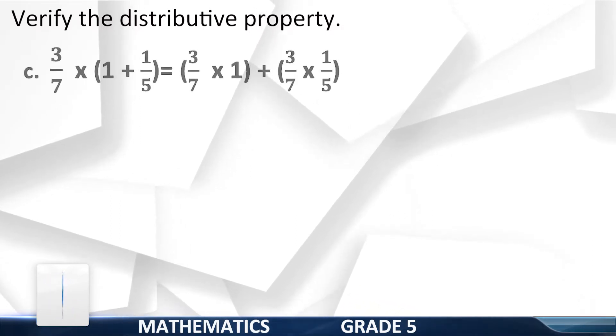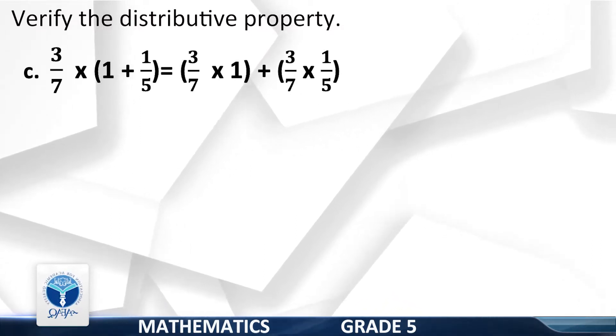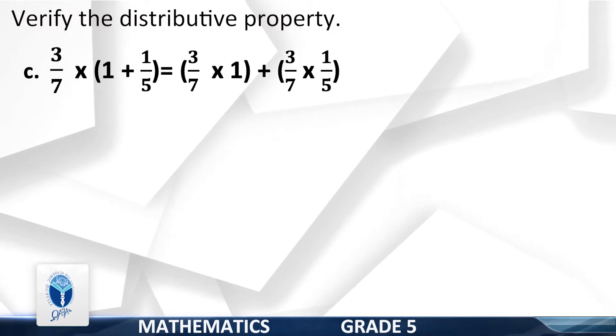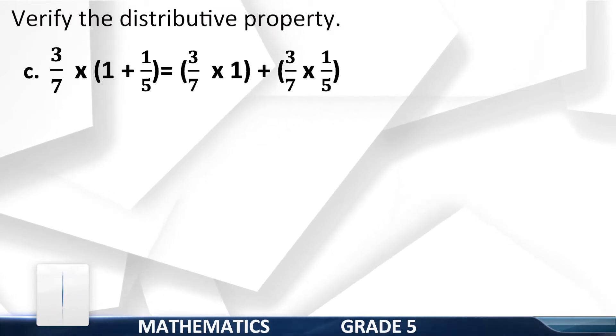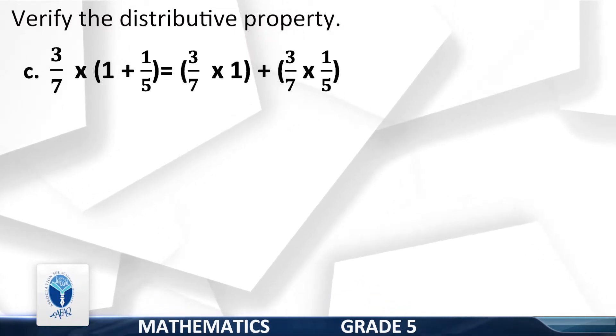Part C: 3/7 multiplied by (1 plus 1/5) equals (3/7 into 1) plus (3/7 multiplied by 1/5).